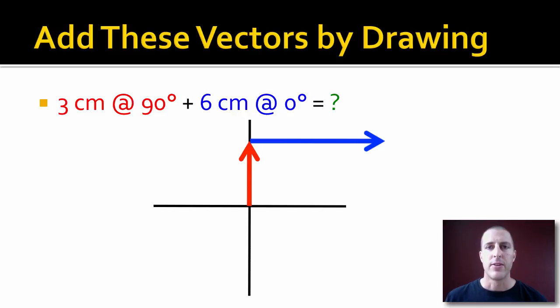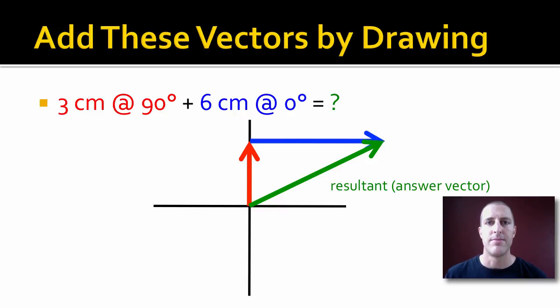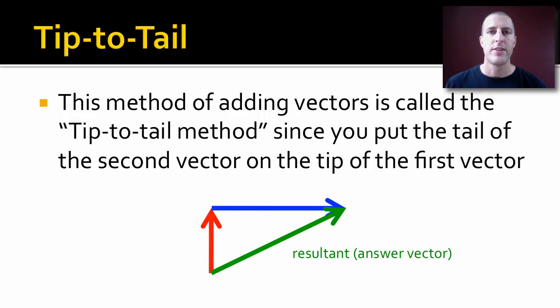And our answer vector, the green vector, our resultant, is going to go straight from the base of the red vector to the tip of the blue vector. It's a shortcut from start to finish. That's our answer. We would then measure that with both a ruler and a protractor to figure out what the magnitude and direction are. It's called the tip to tail method because we put the tail of the second vector on the tip of the first vector.